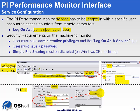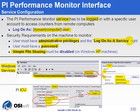There are three additional points to pay attention to. First, on Windows XP machines, there is something called Simple File Sharing — that must be disabled. Also, users must have a password. And they also have to have administrative privileges on the remote machines, as well as the Logon As a Service right, which is a special permission in Windows.